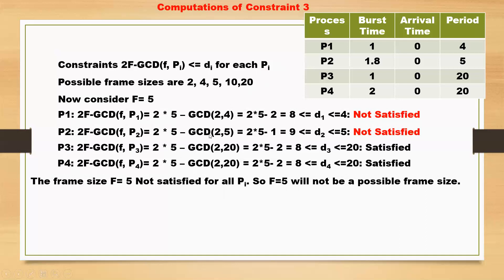Next, consider f=5. For P1: 2×5 minus GCD(5,4) = 10 minus 1... actually 2×5 minus GCD(2,4) = 10 minus 2 = 8, which is not less than or equal to D1=4. Once again it is not satisfied. So f=5 will not be taken as the frame size. Frame size 5 is not acceptable, and further computations are redundant.